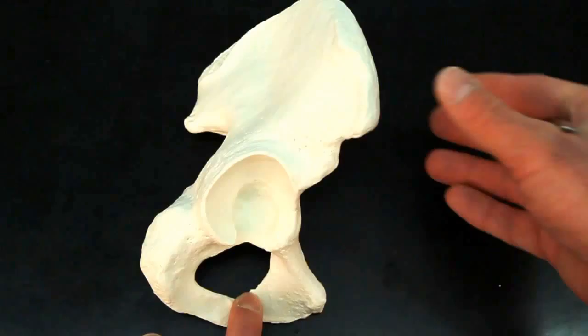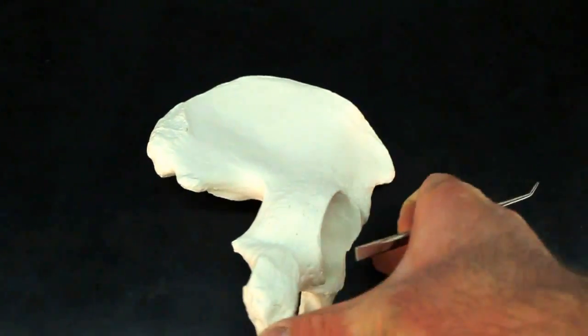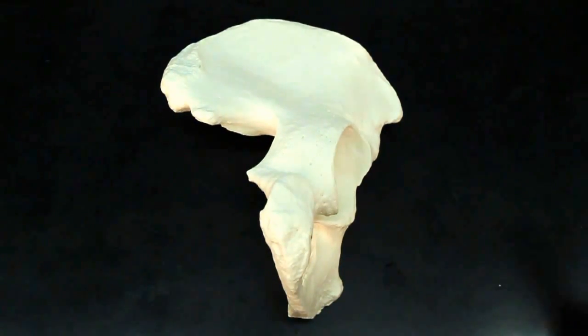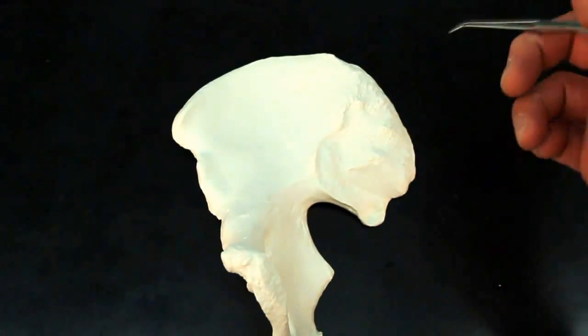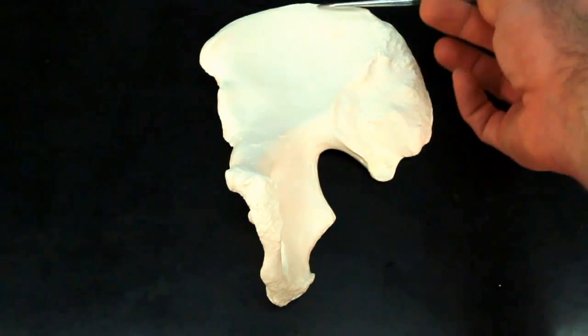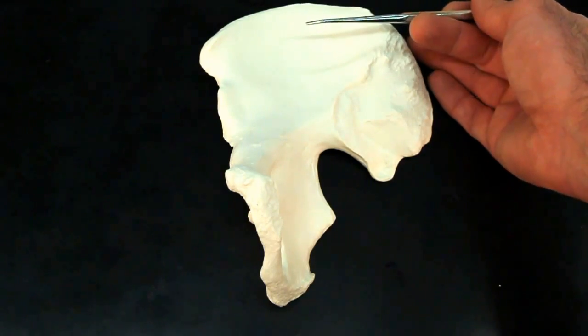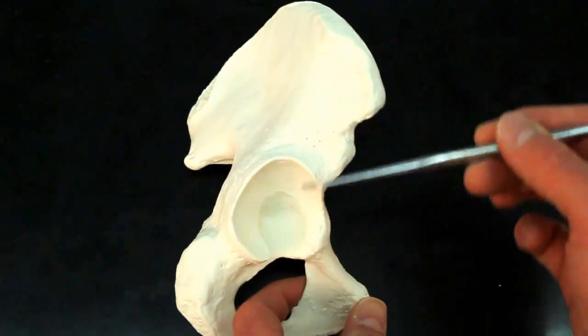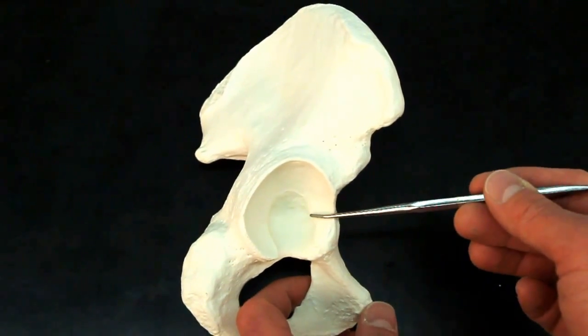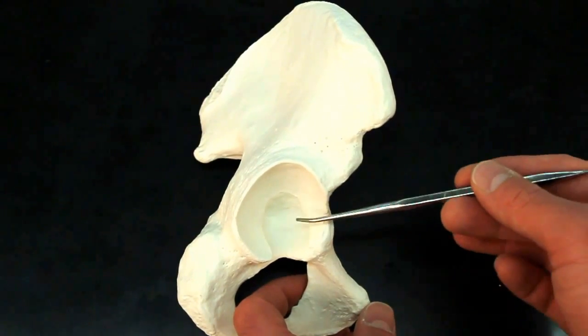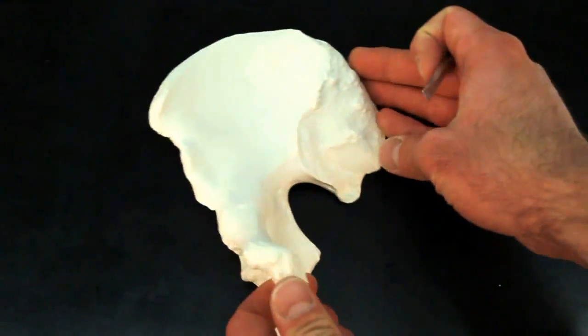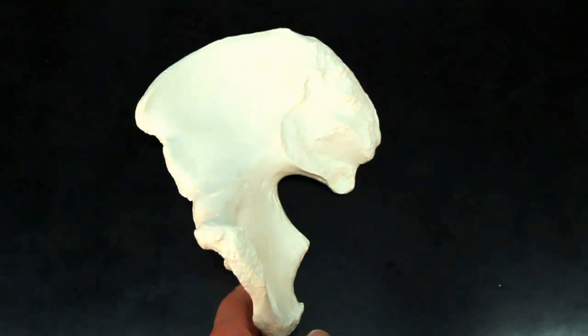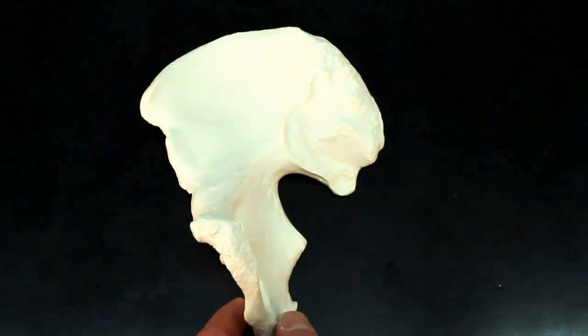So how do we know if this is a right or a left coxal bone? Well, we can look at it and say, we know the pubis is anterior, ilium is superior, and acetabulum better be lateral, because our hip joint, our pelvic joint is out lateral. So we can say this is going to be a right pelvic bone, or a right coxal bone.